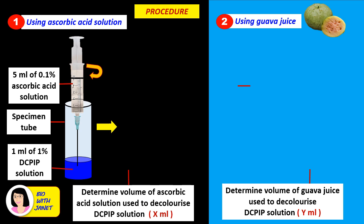Let's discuss the procedure for determining the concentration of vitamin C in fruit juices. There are two stages. The first part is using ascorbic acid solution to decolorize the DCPIP solution, and then determining the volume of ascorbic acid used — called the X value, or X ml. The second part is using guava or mango juice to decolorize the DCPIP solution, and determining the volume of fruit juice used to decolorize 1 ml of DCPIP solution — that's the Y value.